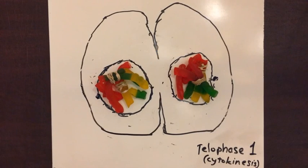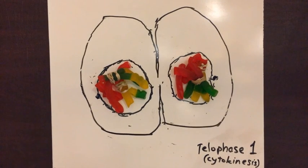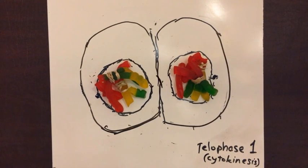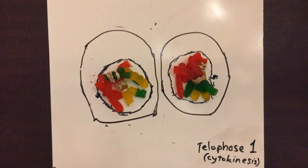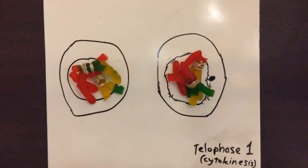The next step is cytokinesis when the cytoplasm divides. Now the cells have gone from diploid to haploid. Now we have two non-identical cells.